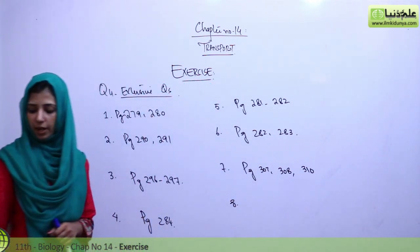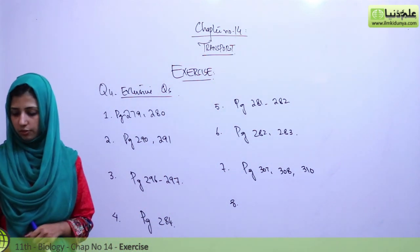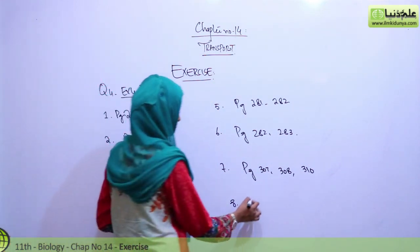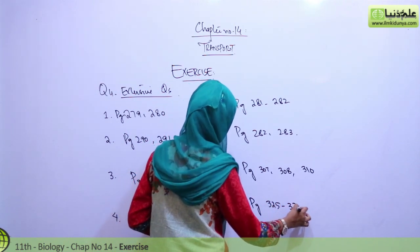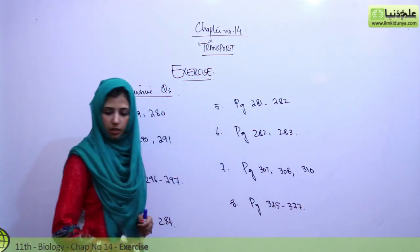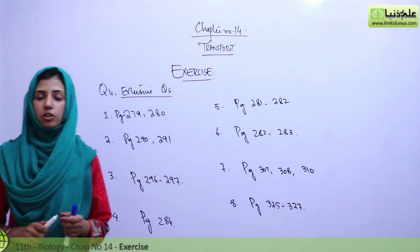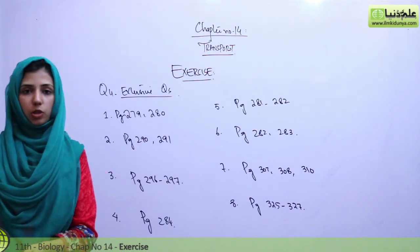After that, questions about immunity. This is on page 325 to page 327. So that's all about the whole chapter, whole exercise, and the whole book.